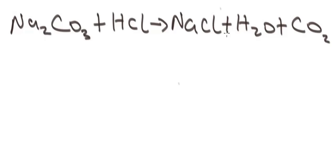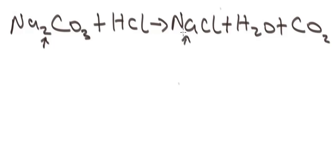We balance using what we call atom counts — it's the easiest way to do it. Let's do it together. At the left-hand side of the equation, let's begin with the element sodium. We have how many atoms of sodium? We have two atoms of sodium. Where are they at the right? We have one atom of sodium. That means sodium is not balanced — we need to balance sodium.